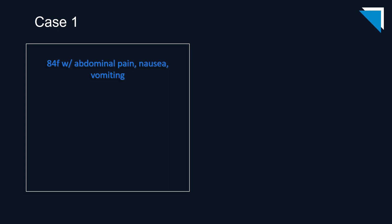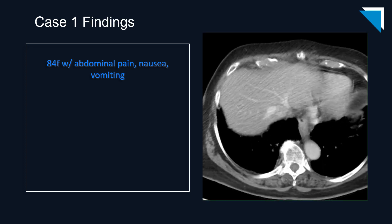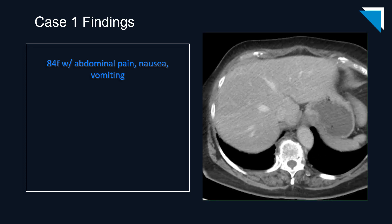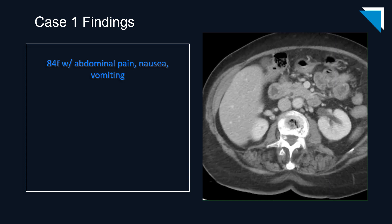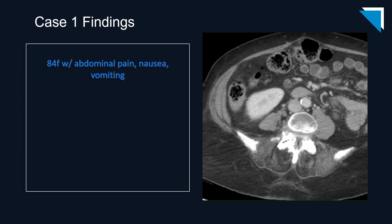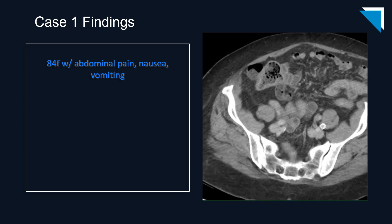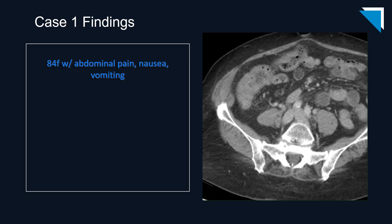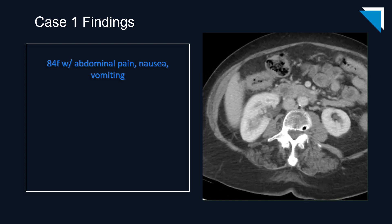Our first patient is an 84-year-old woman with abdominal pain, nausea, and vomiting. These are axial images from a CT scan of the abdomen and pelvis. Of course, if you were reading this in real time you would be scrolling up and down the various sections as you engage your search pattern. For the purposes of this lecture, I will scroll down and then back up so you can see all the relevant pathology.